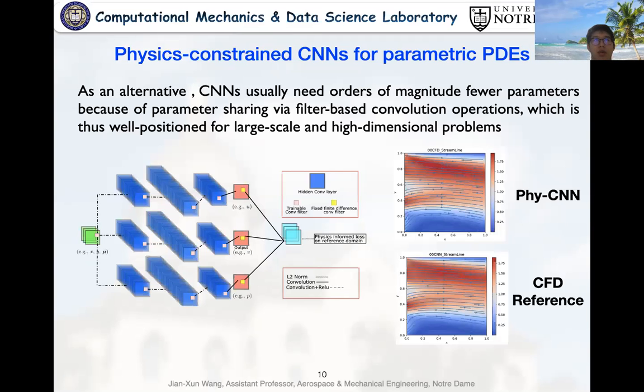As an alternative, the convolutional neural networks usually need orders of magnitude fewer parameters because of parameter sharing with filter-based convolution operations, which is thus well positioned for large-scale and high-dimensional problems. Here shows our physics-constrained CNNs for fluid modeling. In this framework, the input is the spatial coordinate and the parameters while the output are spatial fields of UVP respectively. The result shows that it can actually learn the flow field with high accuracy without using data. Especially in the figures, we can find that the streamline can be accurately captured and almost identical to the CFD cases.